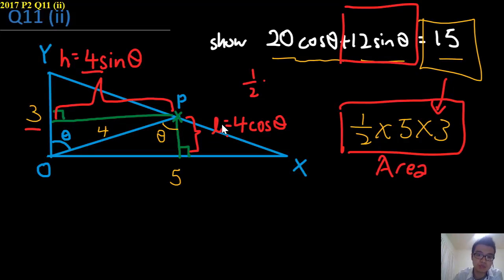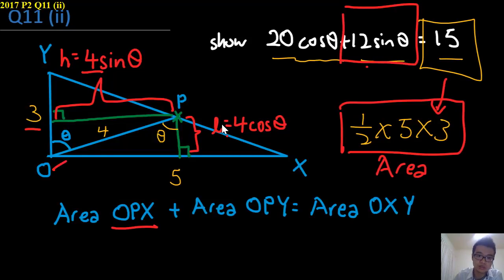Because it's half base times height, the half will be a bit of an issue. But let's just do it first and you can see how it goes. Label OPX, OPY, and lastly OXY being the whole triangle itself.